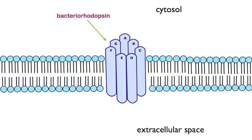Bacteriorhodopsin is a transmembrane protein that contains seven membrane-spanning alpha helices. The helices are labeled A through G in this diagram.